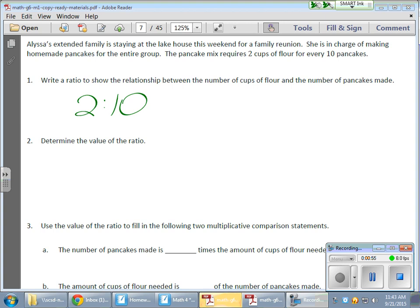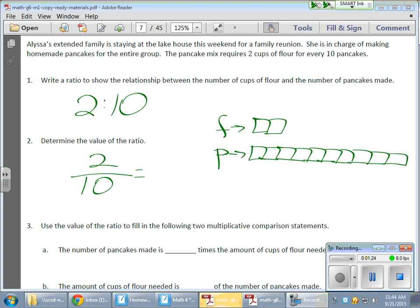And then it says, determine the value of the ratio. To determine the value of the ratio, I want to turn it into a fraction, so it looks like a 2 out of 10 situation. Now a 2 out of 10 situation, if I was to draw this out, I have flour here and pancakes here, and 2 cups of flour for every 10 pancakes: 3, 4, 5, 6, 7, 8, 9, 10 pancakes.